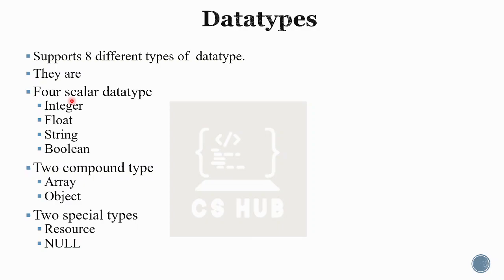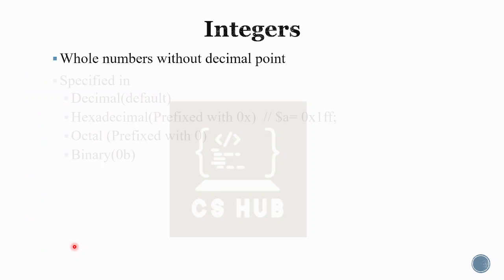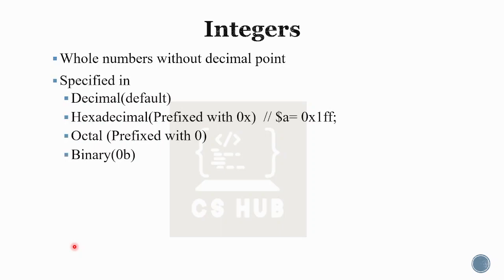The 4 scalar data types are integer, float, string, and boolean. For the integer data type, it includes all numbers without a decimal point. PHP supports 4 number systems for integers: decimal, hexadecimal, octal, and binary.